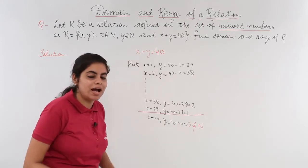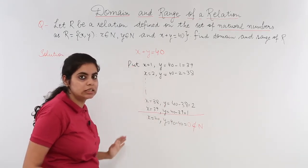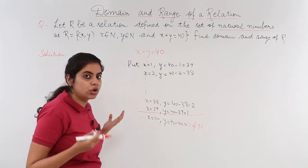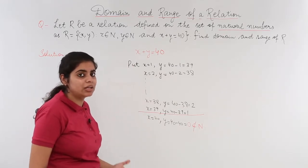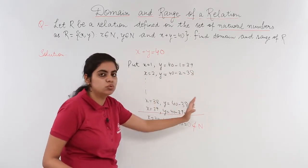That means, I have to take my values of x from 1, 2, 3 till 39. And correspondingly, I will get values of y from 39, 38, 37 till 2 and 1.